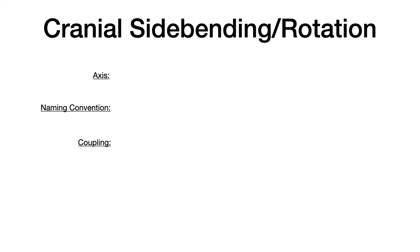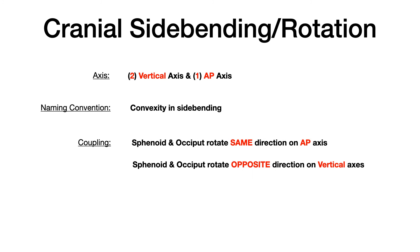For side bending/rotation dysfunctions, there are actually two different axes: two vertical axes and one AP axis. The naming convention is the convexity during side bending — whichever side is the convexity, that's how you name the dysfunction. The coupling is that the sphenoid and occiput rotate the same direction on that one AP axis, but rotate opposite one another on the two vertical axes. That difference in axes is very, very high yield.